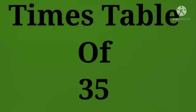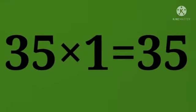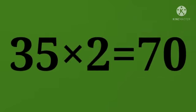Times table of 35. 35 times 1 equals 35. 35 times 2 equals 70.